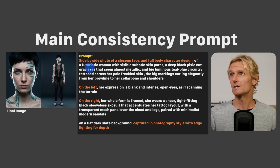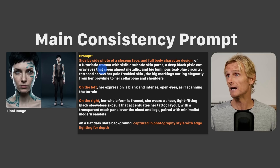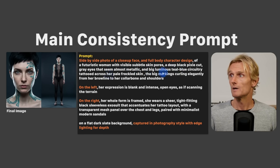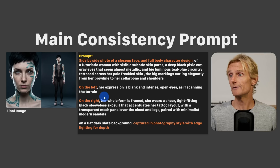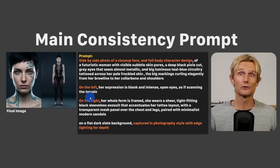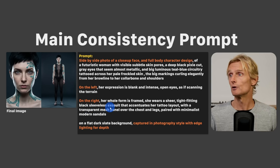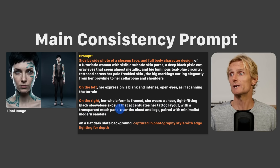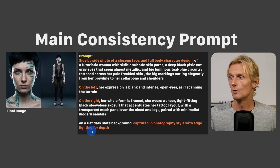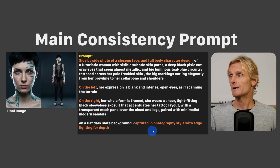I ended up with: 'side-by-side photo of a close-up face and full body character design of a futuristic woman with visible subtle skin pores, a deep black pixie cut' — and then I described her tattoos. Then 'on the left: her expression is blank and intense, open eyes as if scanning the terrain.' Then 'on the right: her whole form is framed, she wears a sheer tight-fitting black sleeveless exosuit.' I ended with 'on a flat dark slate background, captured in photography style with edge lighting for depth.' Then just click generate on Hicksfield AI.